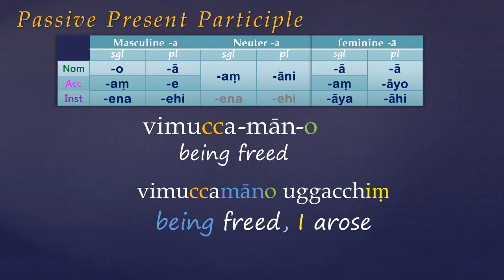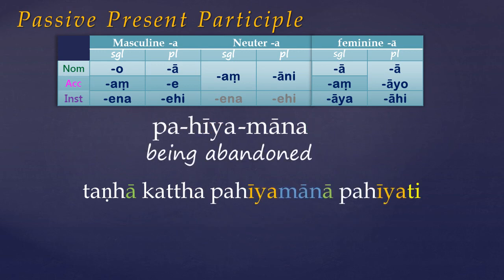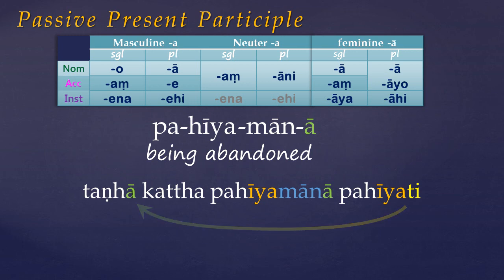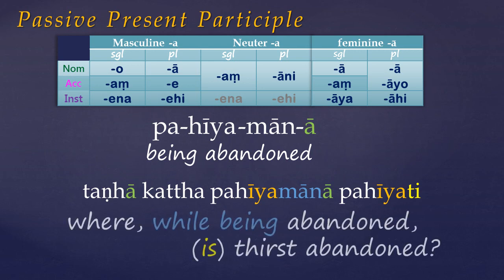In this next example, 'katra' is an adverb meaning 'where', and we have a passive present participle which agrees with the subject 'tanhā' in gender, case and number. There's also a passive verb in the present tense which agrees with the subject in person and number. And so we get the question: 'Where, while being abandoned, is thirst abandoned?' Note that in English, to maintain the passive sense, we have to use a past participle, but many translators actually switch to using just present participles.